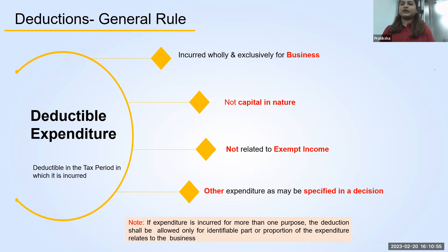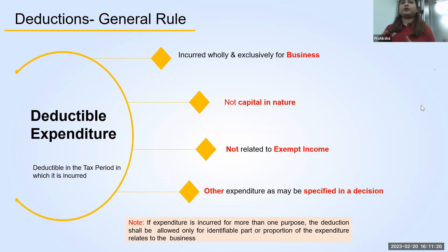Certain incomes are exempt from corporate tax. The expenses which are incurred to earn such income are also exempted, so these expenses will not be allowed as a deduction. Any other expenses specified by the cabinet decision can also be included here. If you are having multiple expenses relating to your business and personal nature, and if you can identify the nature of expense which is personal and which is for business, only the part of the expense relating to the business can be allowed as a deduction.